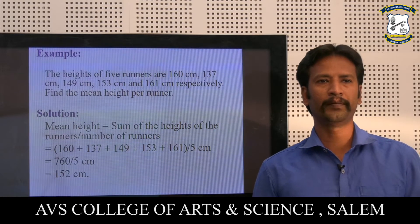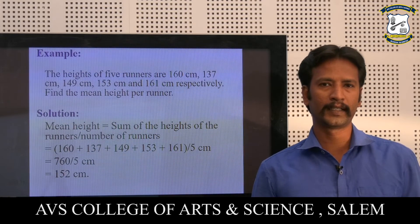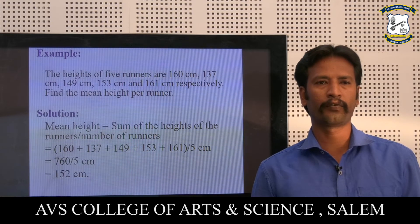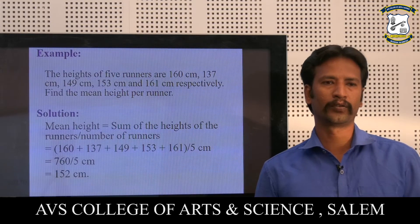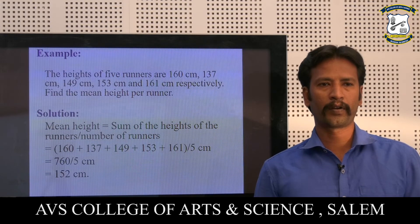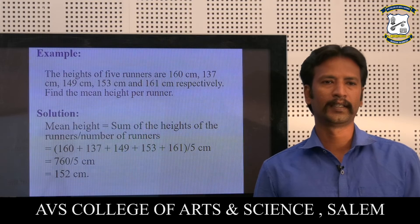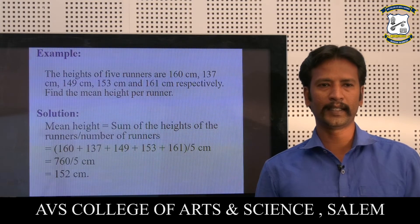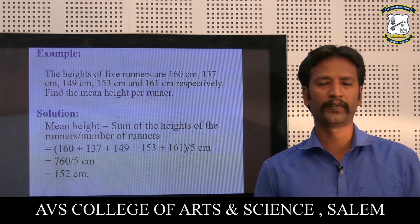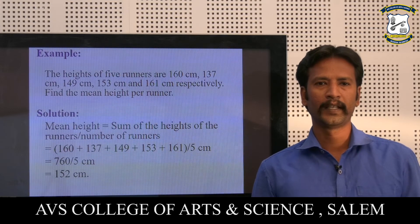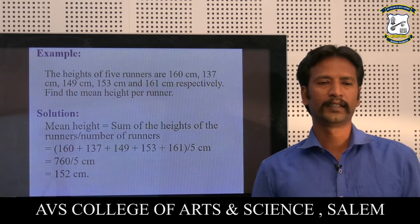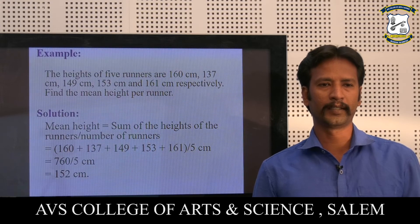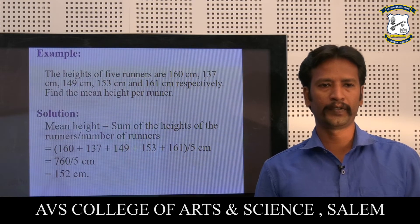Another example: the heights of 5 runners are 160 cm, 137 cm, 149 cm, 153 cm, and 161 cm respectively. Find the mean height per runner. The mean height equals the sum of the heights divided by the number of runners: 160 + 137 + 149 + 153 + 161 = 760, divided by 5 cm. Therefore, the mean height equals 152 cm.